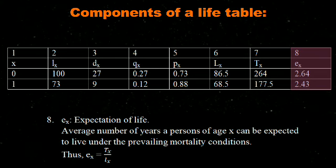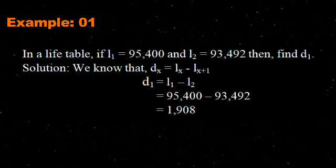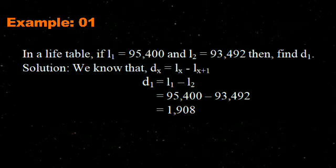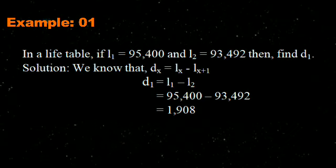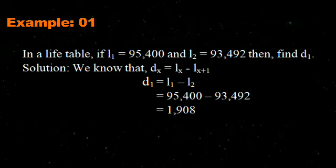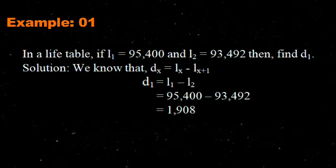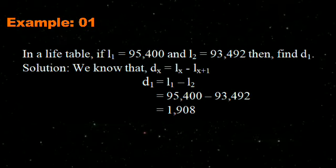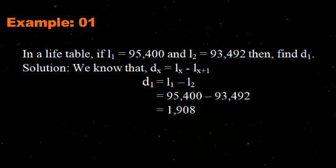Example 1: In a life table, if l1 = 95,400 and l2 = 93,492, find D1. We know that Dx = lx − l(x+1), so D1 = l1 − l2 = 95,400 − 93,492 = 1,908.